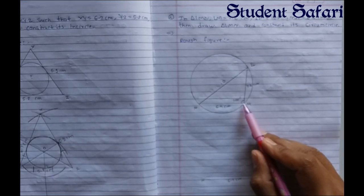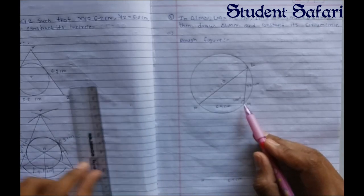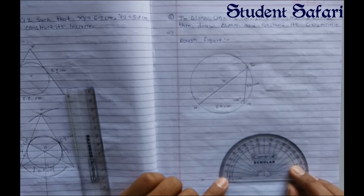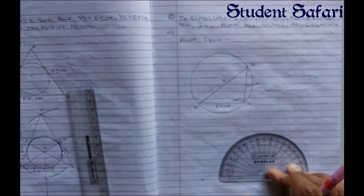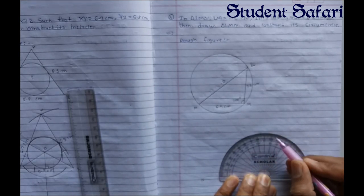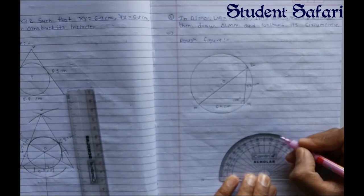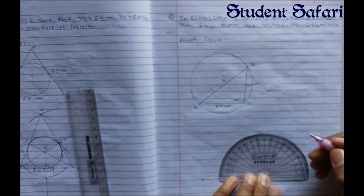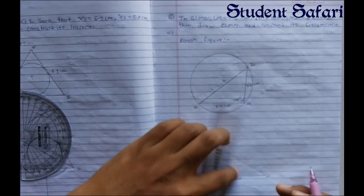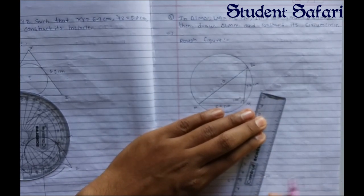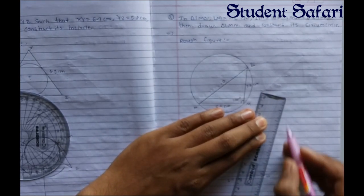We have the measurement of angle M which is 105 degrees. Put the protractor on point M and measure up to 105 degrees: 10, 20 up to 90, 100, and 101, 102, 103, 104, 105. After joining this new point to M we get angle M equal to 105 degrees.